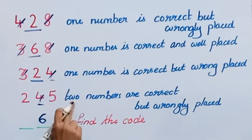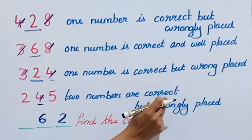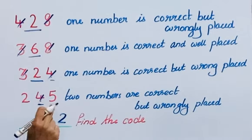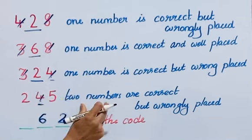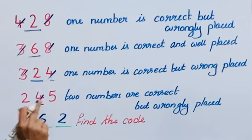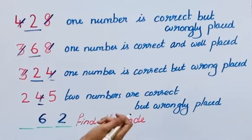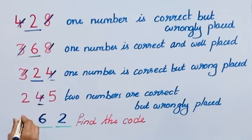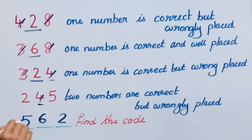From clue 4 (245), the two correct numbers are 2 and 5. We've already placed 2 on the right. So 5 must go in the remaining position. Therefore, the 3 digit code is 562.